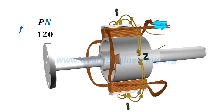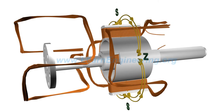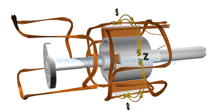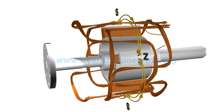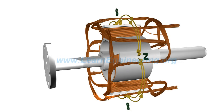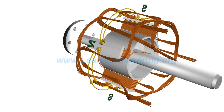For producing three-phase AC current, two more such armature coils, which are in 120-degree phase difference with the first, are put into the stator winding. Generally, one end of these three coils are star connected, and three-phase electricity is drawn from the other ends.